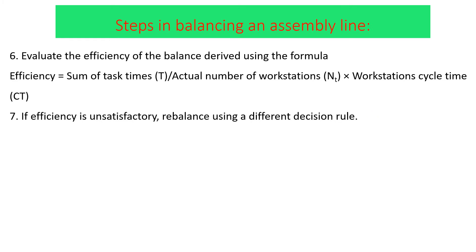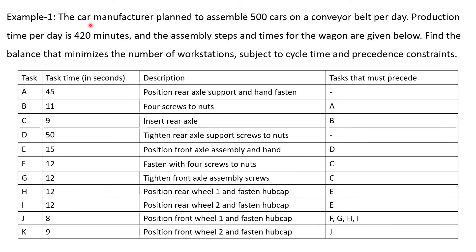Let's move to an example. A car manufacturer plans to assemble 500 cars on a conveyor belt per day. Production time per day is 420 minutes. The assembly steps and times for the wagon are given. Find the balance that minimizes the number of workstations subject to the cycle time and precedence constraints. There are eleven tasks in total, each with a given time requirement.